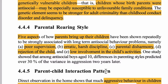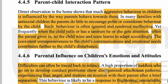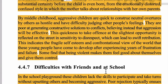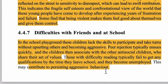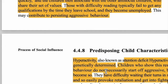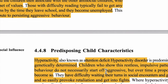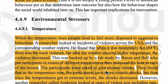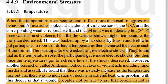Third हमने environment and genes देखा। Fourth था parental rearing style — poor supervision, erratic, harsh discipline आदि। Fifth था parent-child interaction pattern। Sixth था parental influence on children's emotions and attitudes। Seventh था difficulty with friends and at school। Eighth था predisposing child characteristics। अब ninth है environmental stressors।